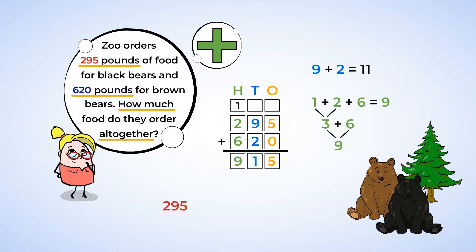And voila! 295 plus 620 is 915. The zoo orders 915 pounds of bear food every week. I don't think I could eat that much in a year.